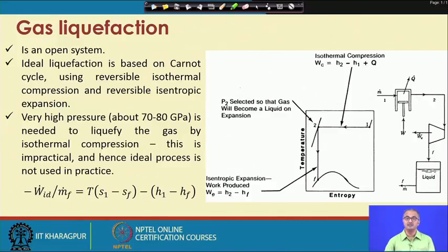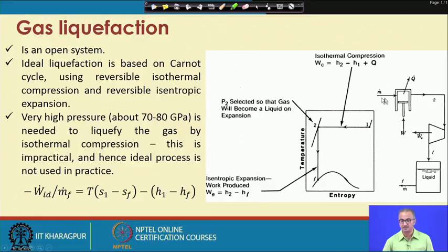Here I shall be highlighting the salient features and the equations needed for the analysis. Liquefaction, unlike refrigeration, is an open system. Here some mass is coming in and part of this mass will be liquefied. This becomes open because in a closed system nothing can go out. The ideal liquefaction is based on the Carnot cycle using reversible isothermal compression and reversible isentropic or adiabatic expansion.